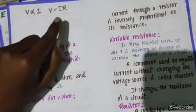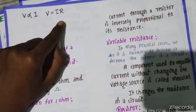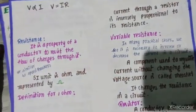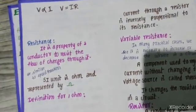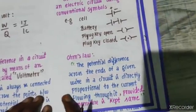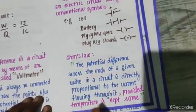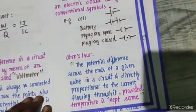If you want to remove this proportionality and replace it with equality, introduce a constant. The constant is R and R is known as resistance. In this video, Ohm's law is very simple. R is the resistance. The potential difference is directly proportional to current, and the condition you have to remember is temperature must remain the same.